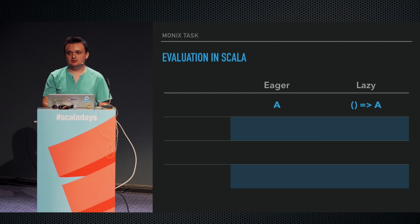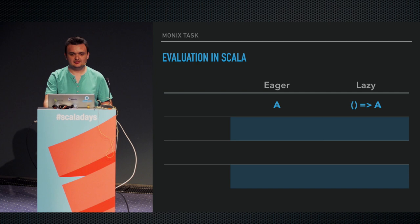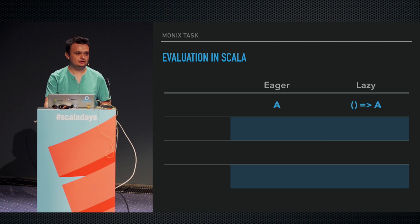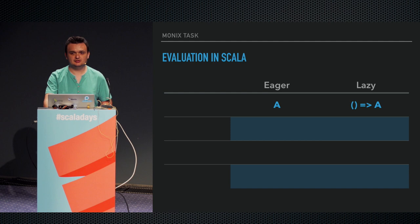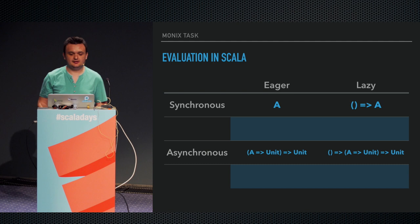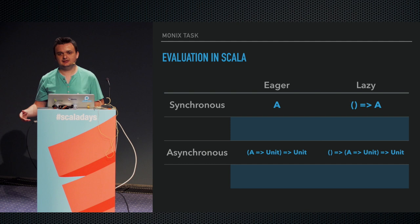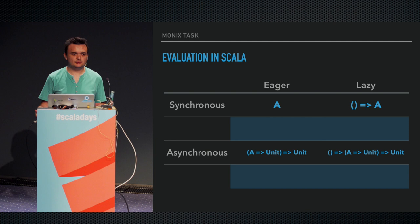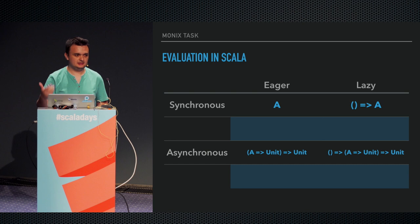Scala is an eager language — expressions are evaluated as soon as the interpreter sees them. To turn them into something lazy and delay their evaluation, you turn them into a function with zero arguments, also called a thunk. This is an effective way to turn something eager into something lazy. This also works for asynchronous processing — you describe asynchrony with something that takes a callback that will be invoked when that external process finishes. Asynchrony is about external processing happening on another thread, another node on the network, and so on.